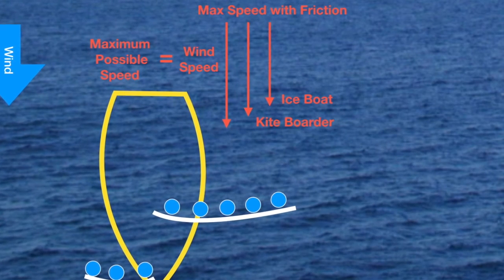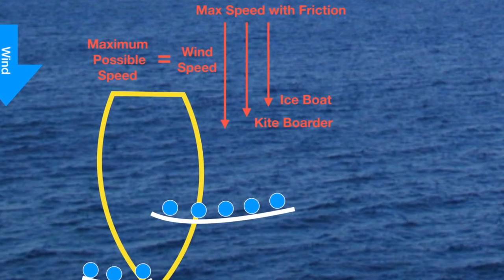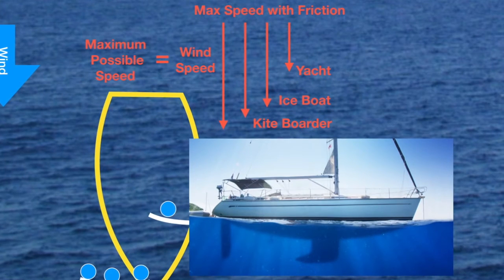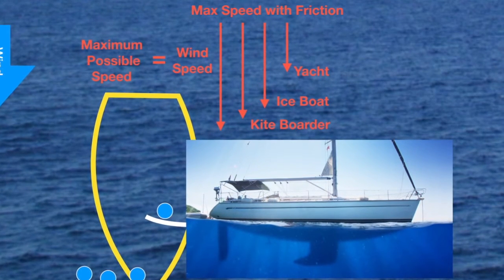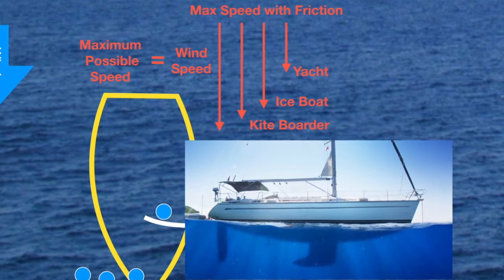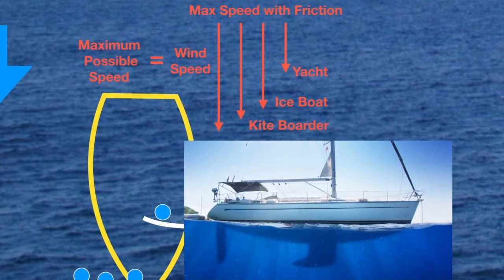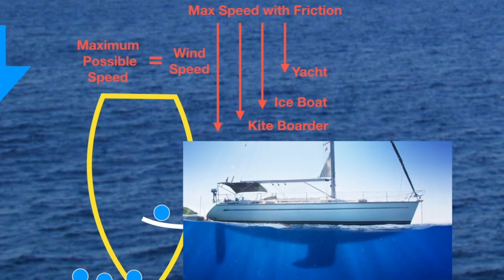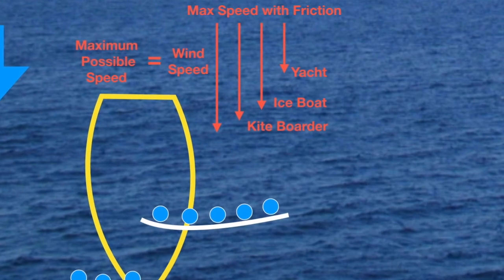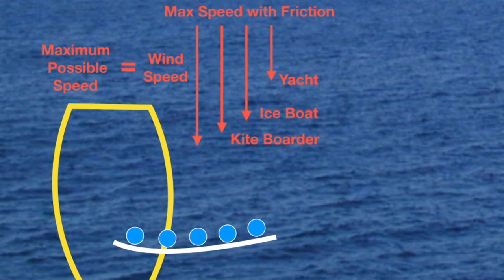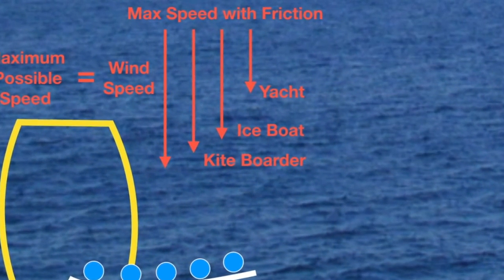Finally, let's take a look at a more traditional yacht. In this case, there is a large amount of the keel, hull, and rudder under the water. As the boat moves forward, this creates a large amount of displacement. The friction associated with this displacement reduces the overall top speed significantly, as shown by the smaller red arrow above.